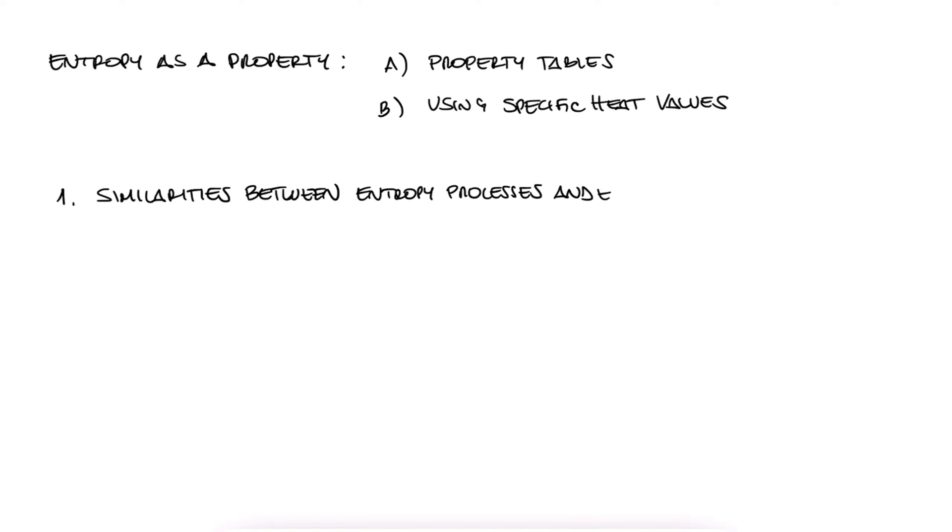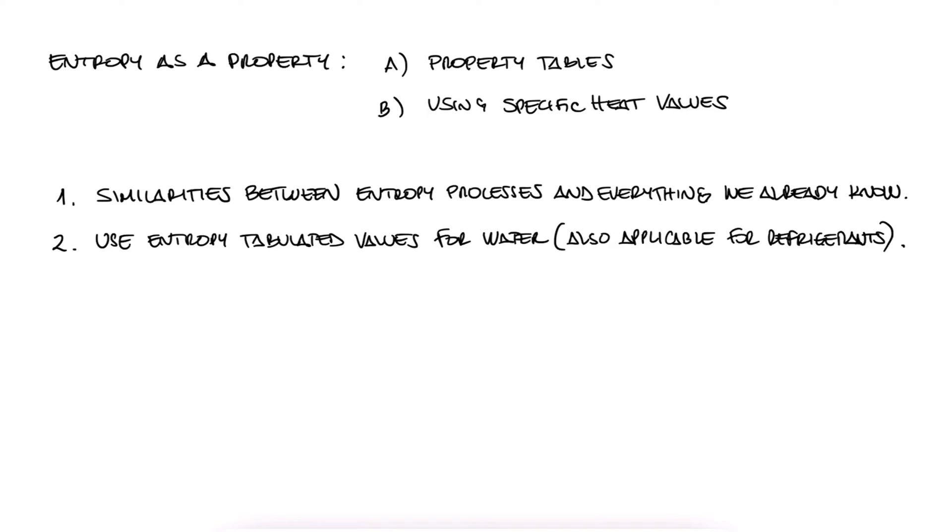For now, just know that entropy is always generated for irreversible real processes. Now, let's look at how we can use entropy as a property by either looking at tabulated values, or just like we did to get to internal energy and enthalpy by using specific heats. There are several differences with some tables and the process to get to entropy with specific heat values, so we'll study that in the next lecture.